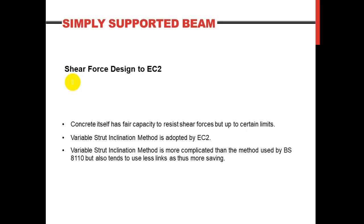Designing the shear links as per Eurocode 2: the concrete itself has a shear capacity when it comes to resisting shear stresses, but only up to certain limits. Beyond those limits we must provide shear links. When designing slabs you don't really provide shear links, but for beams we must provide at least the minimum amount. The method used by Eurocode 2 is called the variable strut inclination method. It is a bit more complicated compared to BS8110, but it tends to use fewer shear links, saving money.